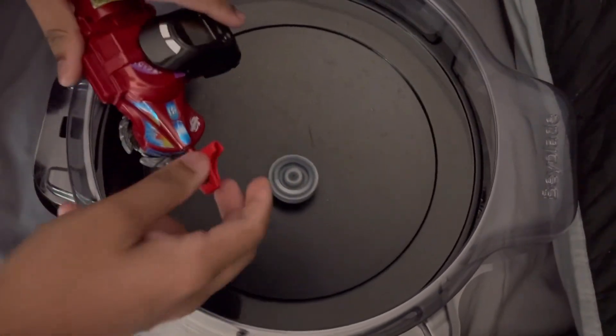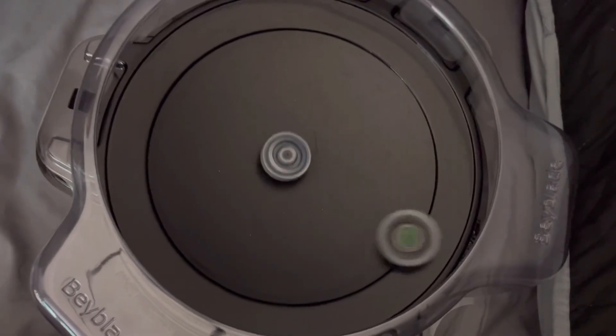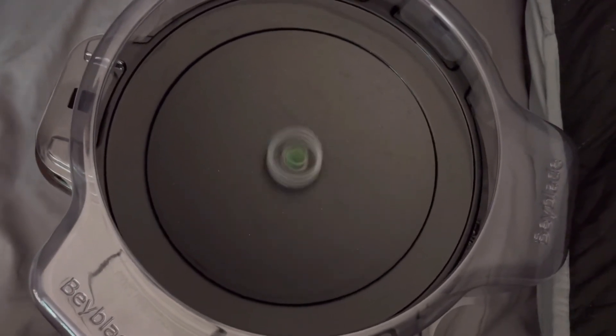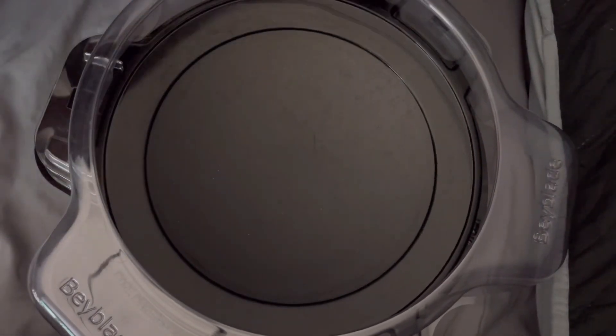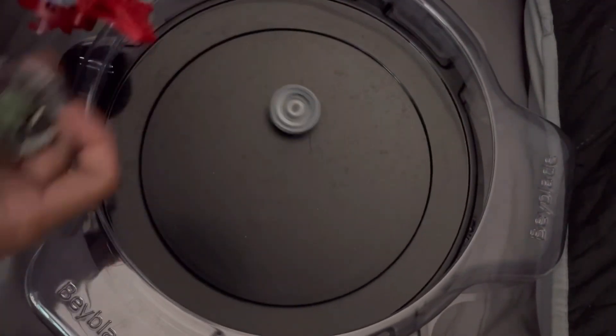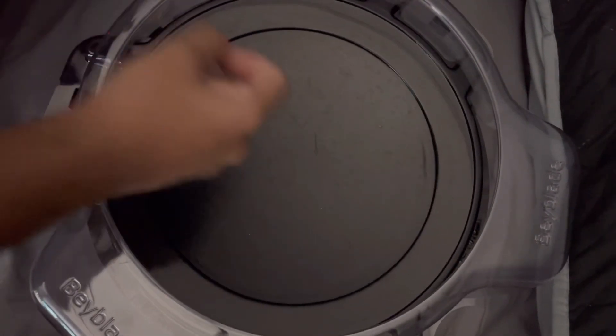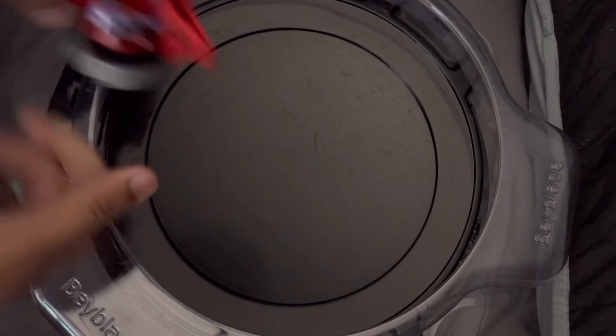So let's see if that change to 85 works. And it does as we see a quick easy knockout from Pegasus sending Twisted Tempo right out of the stadium.